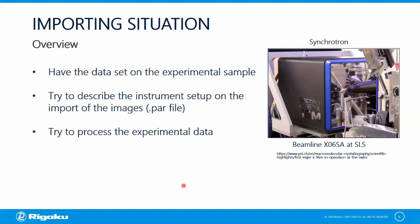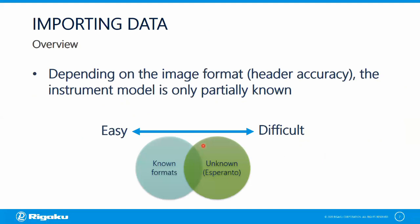The situation we're going to talk about today is importing data from the synchrotron. Here you're going to have the data set on the experimental sample, and then you're going to try to describe the instrument setup when you import the images and create the PAR file. And then you're going to hope everything goes well and you can process the experimental data. So depending on the image format — or the header accuracy of those images — the instrument model is going to be only partially known to almost completely known.